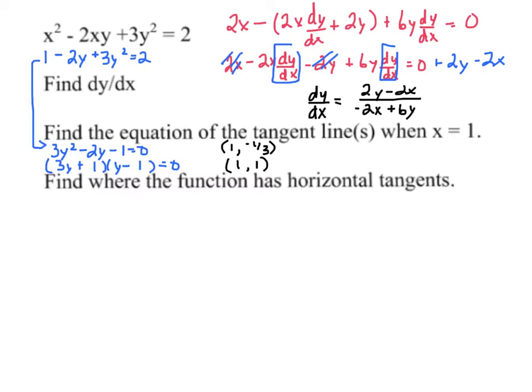So going back here, if I plug in 1 and negative 1/3, 2 times negative 1/3 minus 2, and then negative 2 times 1 plus 6 times negative 1/3. I believe if you type all that in, we get 2/3 as our slope. So the line here would be y equals 2/3(x - 1) minus 1/3.